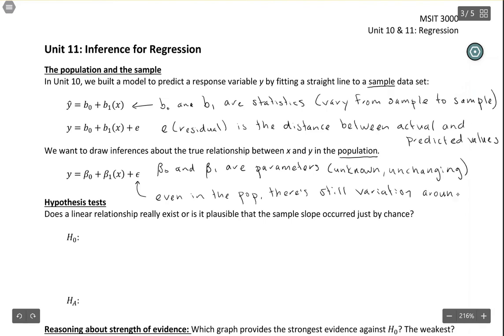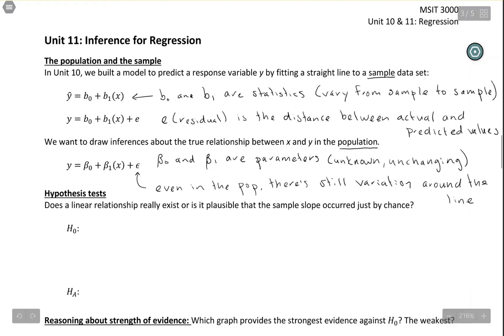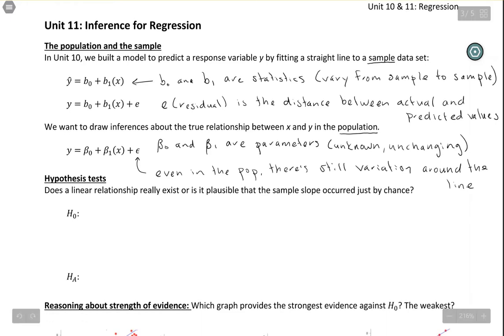Let's write our hypotheses. Does a linear relationship really exist in the population, or is it plausible that the sample slope happened just by chance? The null hypothesis is that β₁ equals 0, meaning there is no linear relationship in the population.